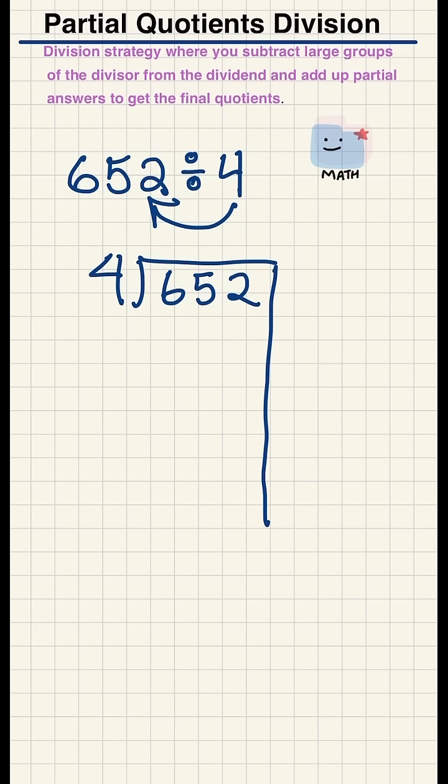So 652 is my dividend, 4 is my divisor. Using my knowledge of base 10, I know that 4 times 100 is 400.